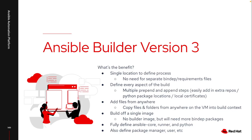You don't have to have a separate bindep or requirements file if you don't want to. However, if you still want to leverage those, you can in this new build process. You can also define really every aspect of the build. In version 1 and version 2, I was limited to one prepend and one append section, which meant I didn't have a lot of control over where these different pieces got added into the container file.